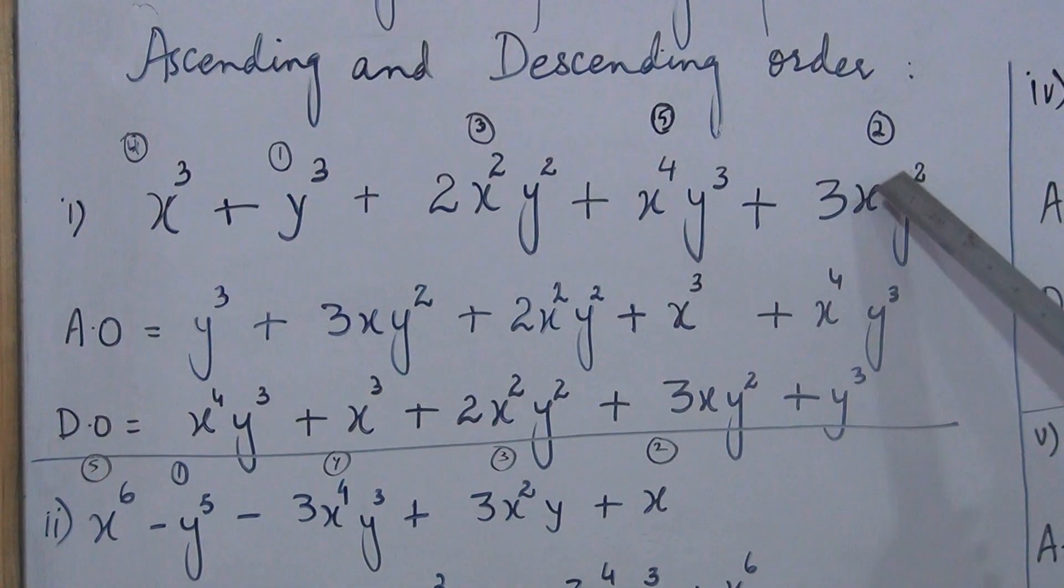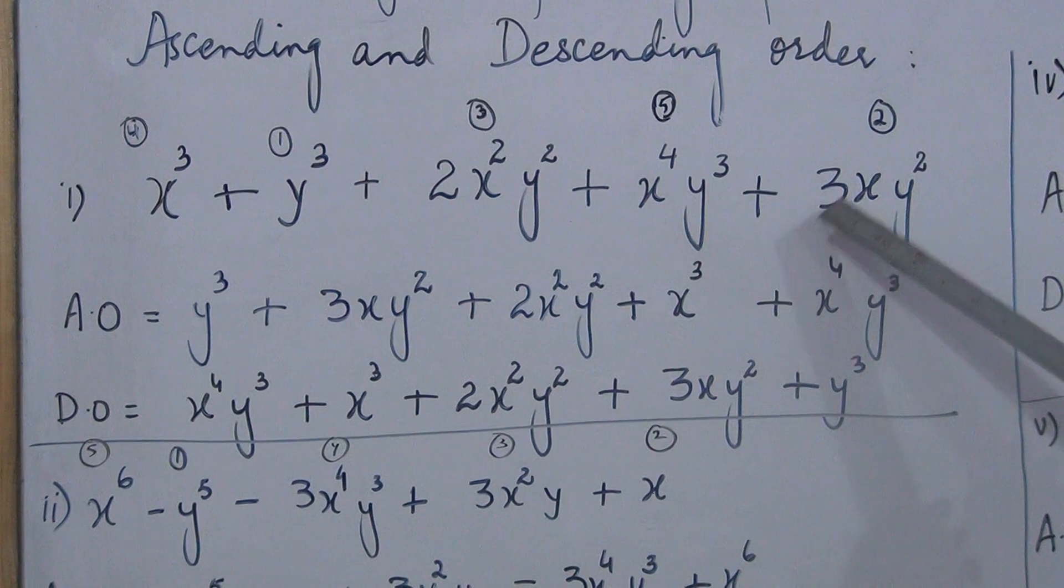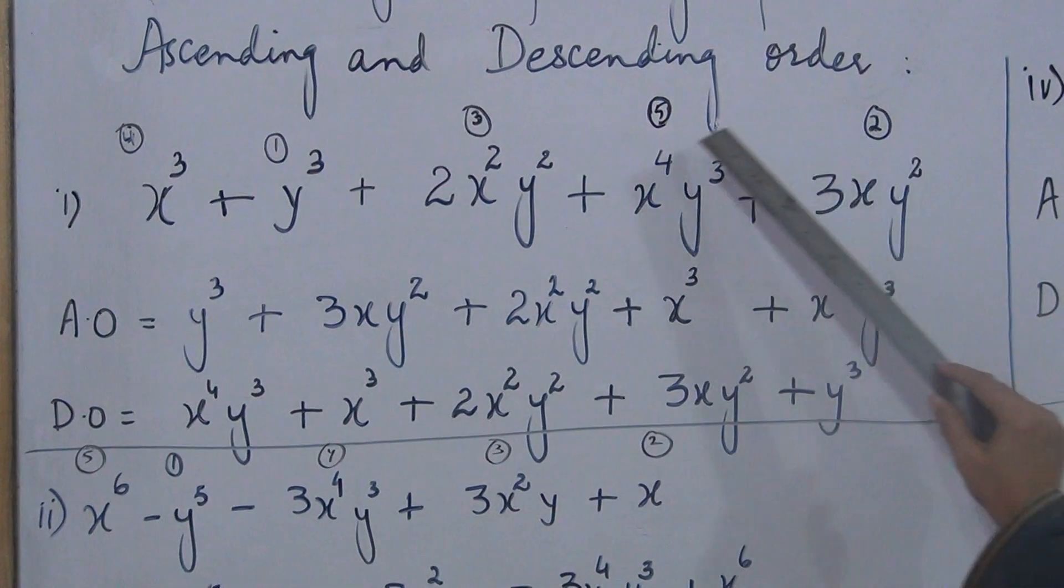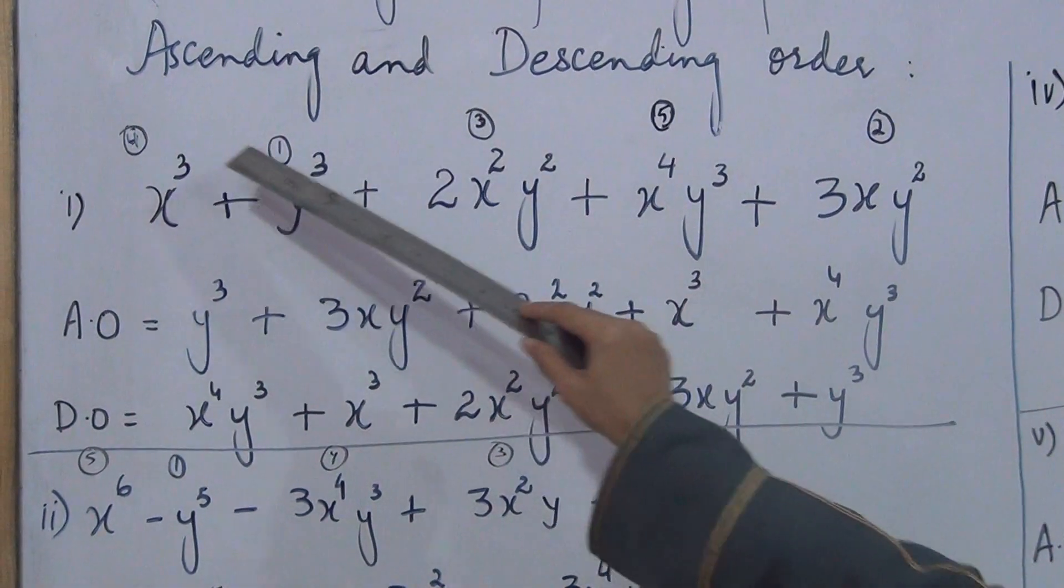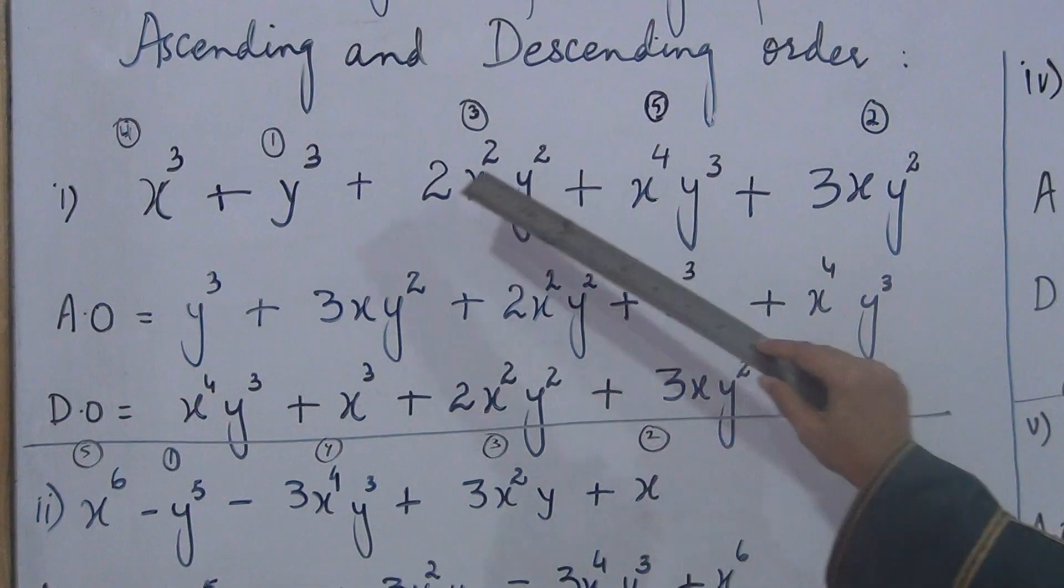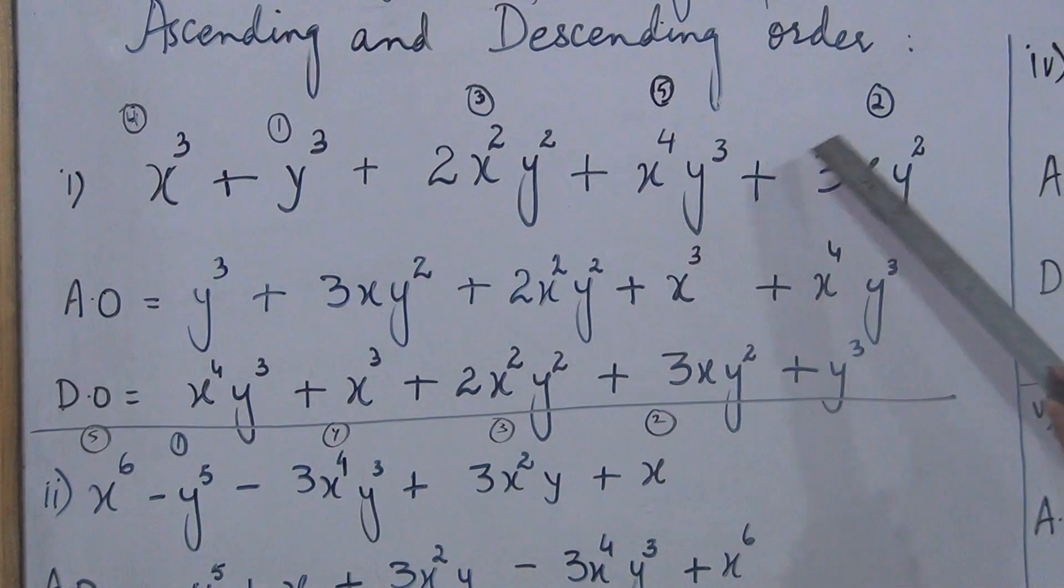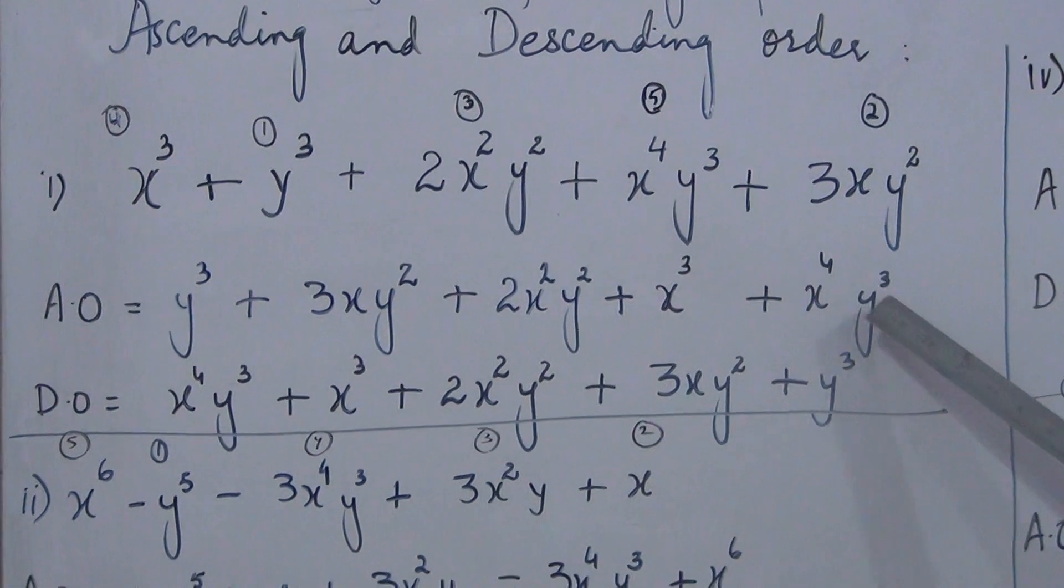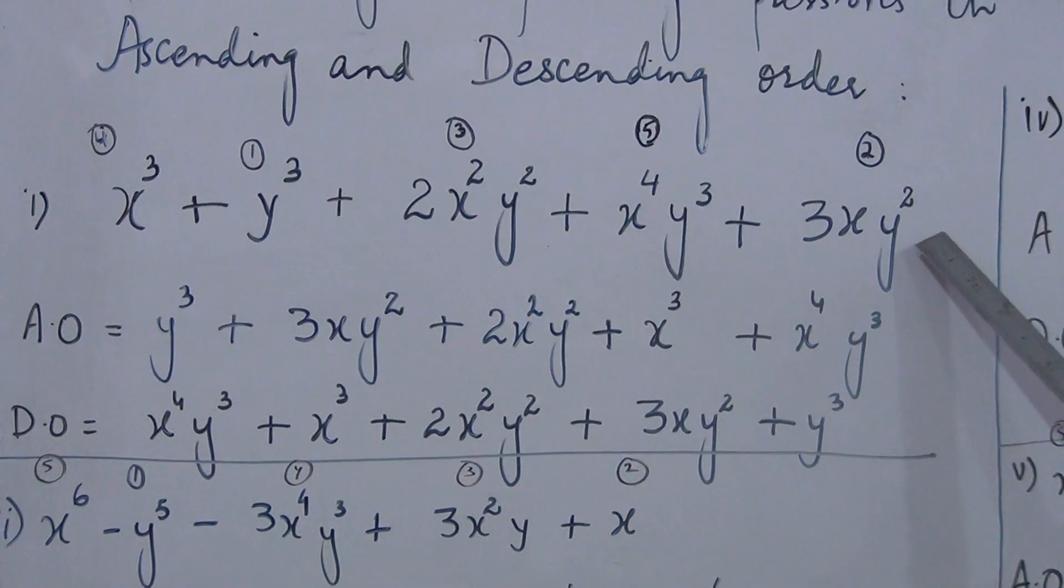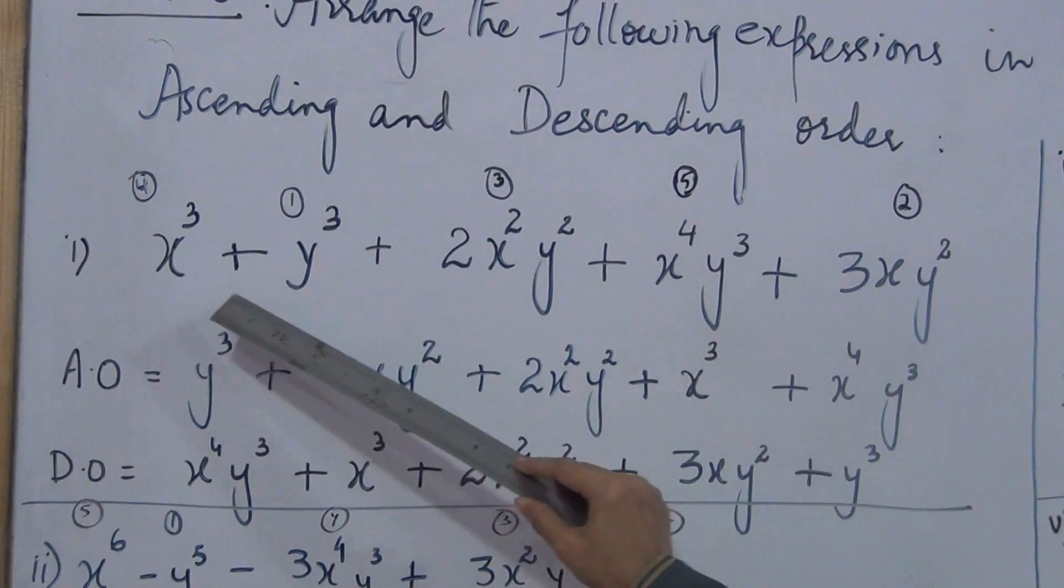Second place, which term should I write? This term. It starts with a sign. Plus three x y square. This numbering I have done, you can do it. This helps make arrangement easy. Third number, we have this term, plus two x square y square. Fourth term is x cube. Then fifth term is x to power four y cube. We have written y as it is with each term.